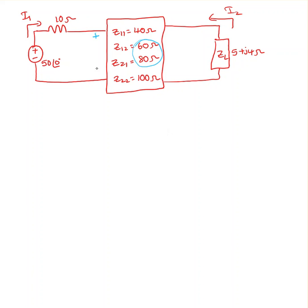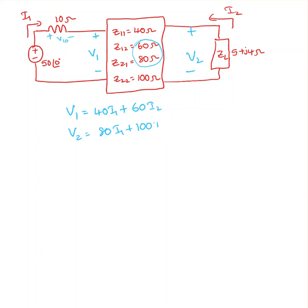One important thing is the given source voltage is not V1. V1 is right here, so V1 equals the source voltage minus some voltage drop, which I'll take as V10. But V2 is the voltage drop across impedance ZL. The first two equations are: V1 = Z11·i1 + Z12·i2, and V2 = Z21·i1 + Z22·i2.